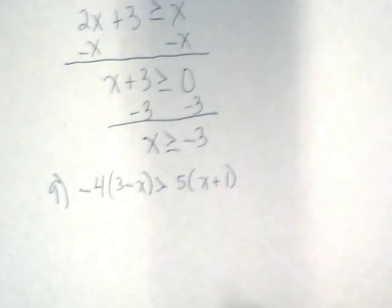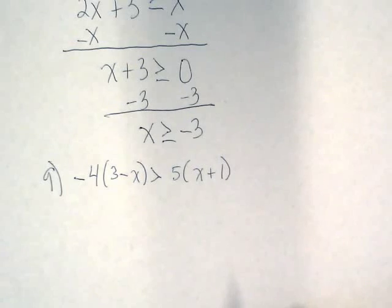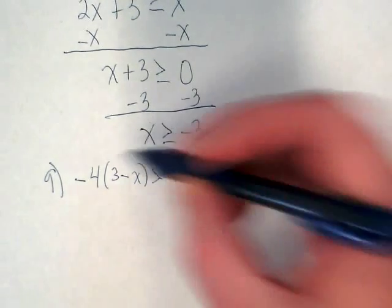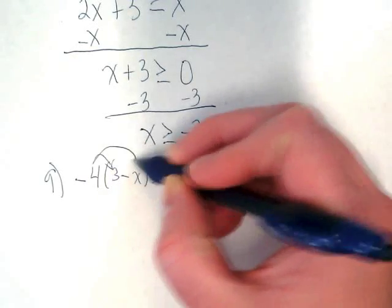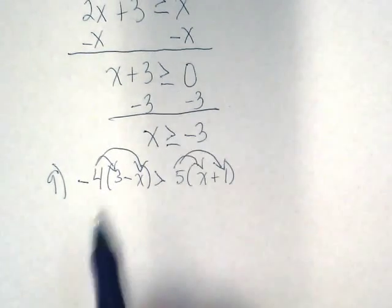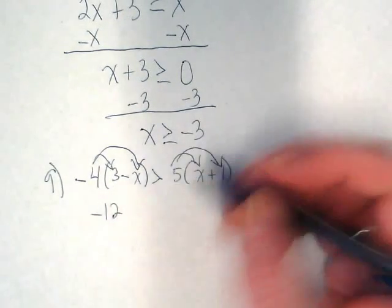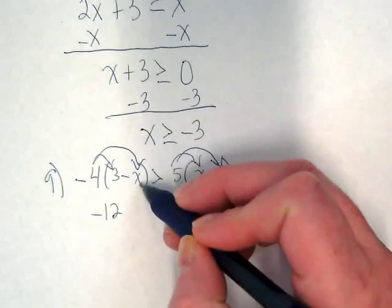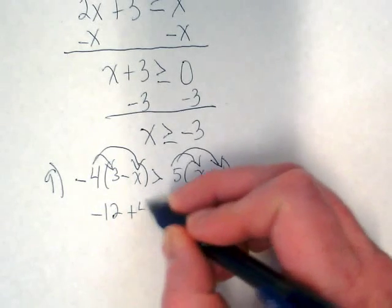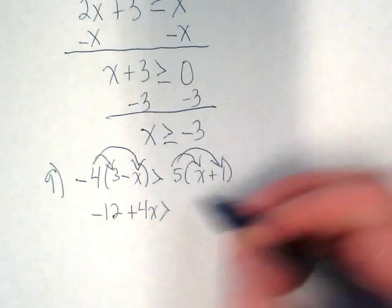First thing I have to do on both sides of the inequality symbol is distribute and I'm going to distribute this here and this here. Negative 4 times positive 3 is going to give me a negative 12. Negative 4 times negative x is going to give me a positive 4x is greater than 5x plus 5.